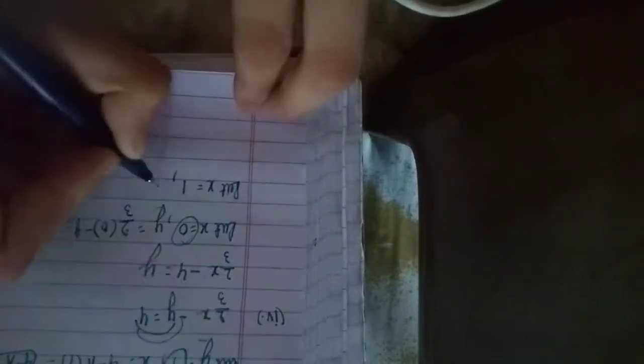Next, if we put x equals 1, then y will be 2 by 3 times 1 minus 4, which equals 2 by 3 minus 4.